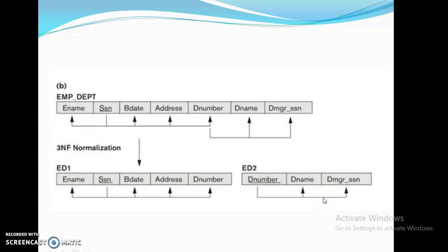So once more: first normal form disallows composite attributes, multi-valued attributes, and nested relations. Second normal form depends on full functional dependency. Third normal form says that no non-prime attribute should be transitively dependent on the primary key.